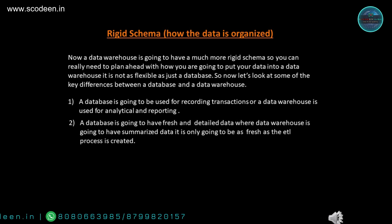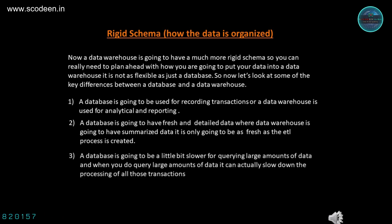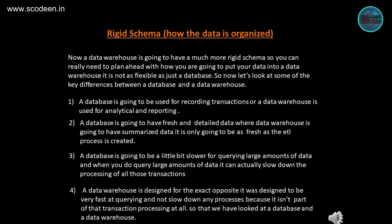Second, a database is going to have fresh and detailed data, while a data warehouse is going to have summarized data — it is only going to be as fresh as the ETL process allows. Third, a database is going to be a little bit slower for querying large amounts of data, and when you do query large amounts it can actually slow down the processing of all those transactions. Fourth, a data warehouse is designed for the exact opposite — it was designed to be very fast at querying and not slow down any processes because it isn't part of transaction processing at all.